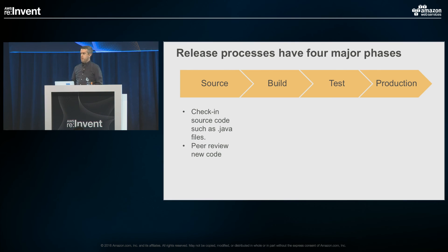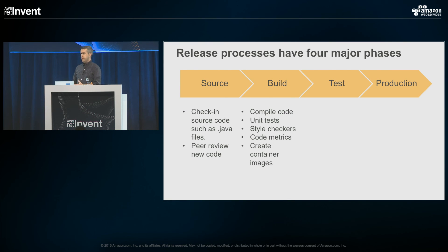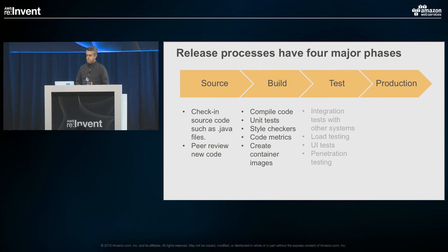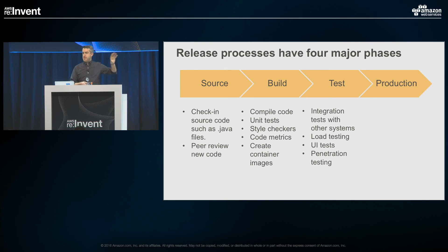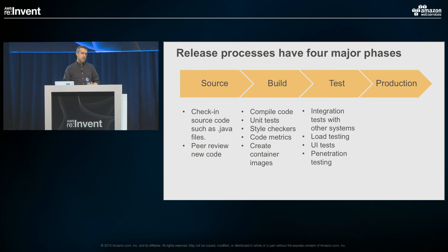The first phase is Source — you have written code, you're storing that code, someone has potentially reviewed it. The code then goes through a Build phase, which could require compilation, unit tests, style checkers, code metrics, creating container images, creating mobile app images, and more. Test takes that application past the build phase for further testing — in the case of a mobile application, something like Device Farm; for a web-based application, putting it into a web environment.